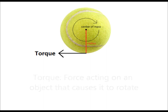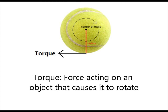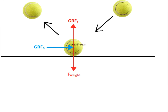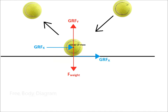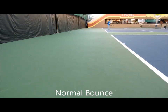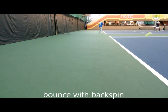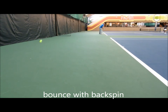Torque can be described as a force acting on an object that causes it to rotate. Mathematically, torque equals force times radius. When the ball strikes the ground, the direction of torque is in the horizontal direction. With Newton's third law, we know that the torque of the ball on the ground will generate an equal and opposite force on the ball. This extra force exerted on the ball in the x direction results in a decreased velocity in the x direction, hence the more vertical bounce of the ball.